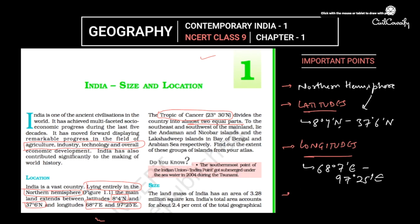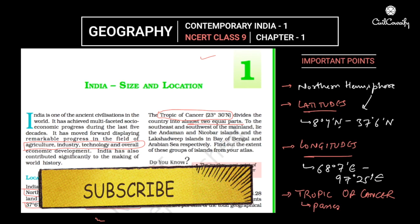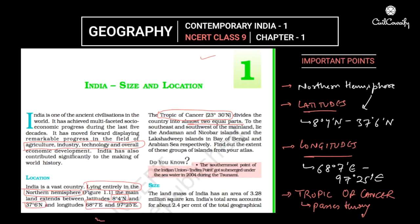Next, a very important thing: the Tropic of Cancer passes through India and it divides the country in almost two equal halves. The Tropic of Cancer is at 23 degrees 30 minutes north latitude. Let's locate this on the political and physical maps for a better understanding.